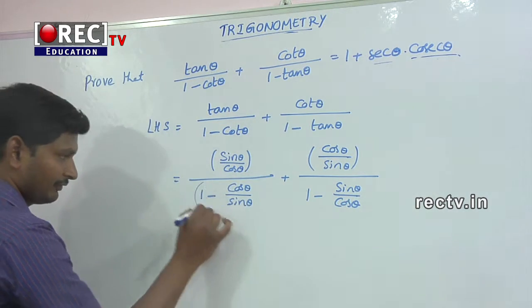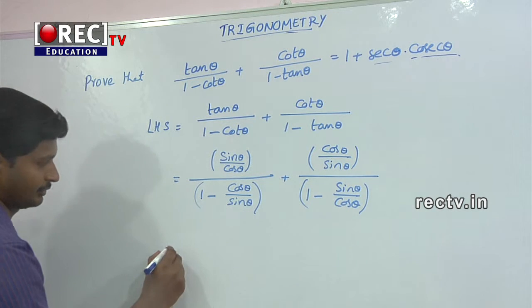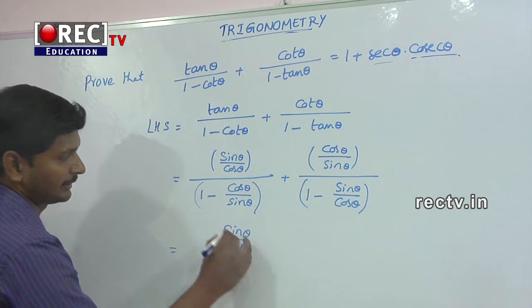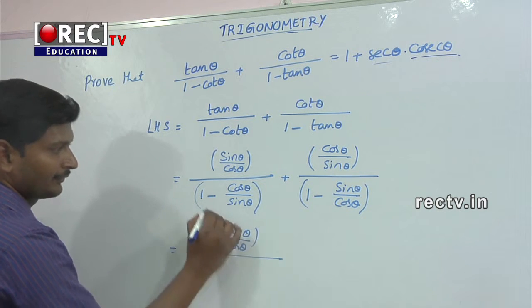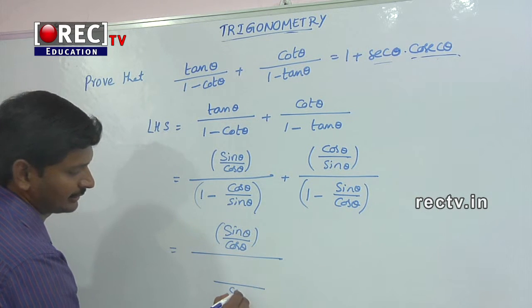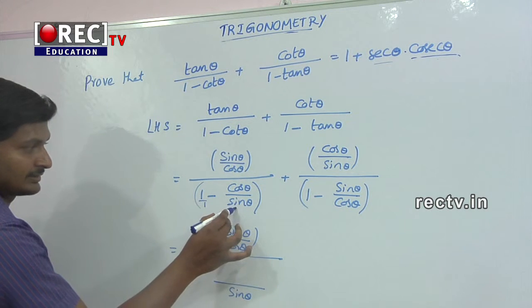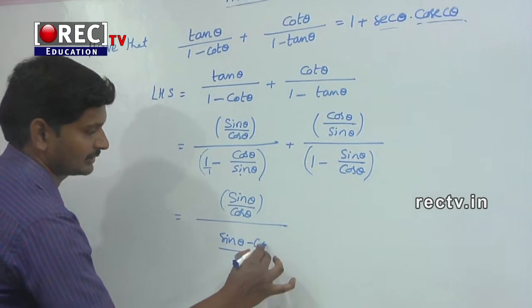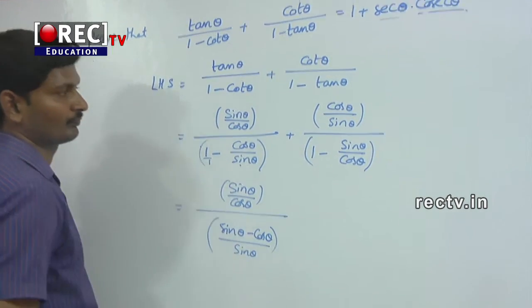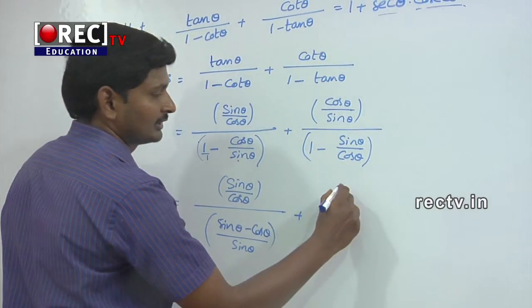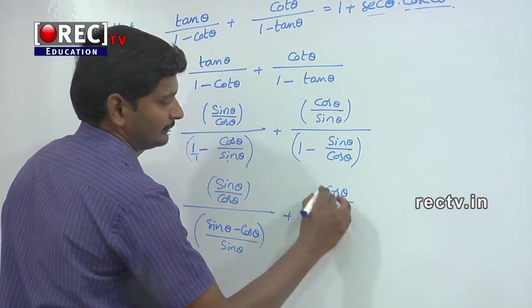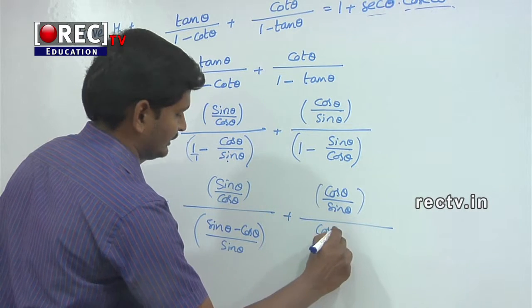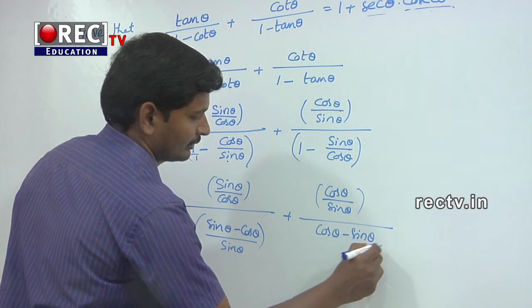For these denominators we need to take the LCM. The LCM for the first term is sine θ, so the denominator becomes sine θ minus cos θ. For the second term the denominator becomes cos θ minus sine θ divided by cos θ.